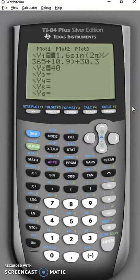Okay, so we'll want to enter this function. It seems to have issues in the calculator if you enter the 30.3 first. So enter the portion with the sine function, and then the 30.3, and then we also want to see when consumption is above 40, so I need to graph that line.